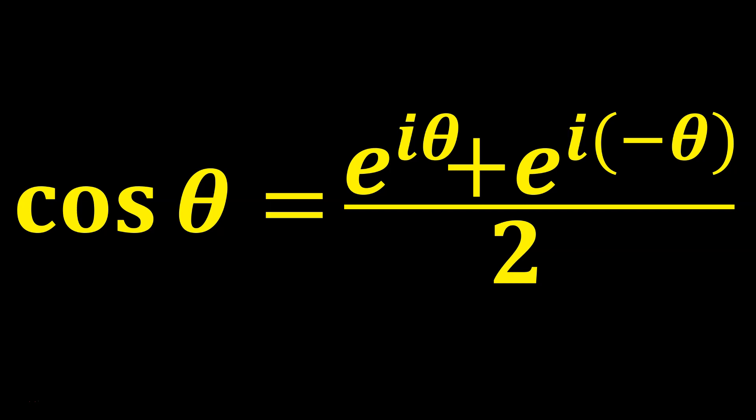Welcome one and all to the Math Magic Show. In this one we're going to prove that cos θ equals e to the iθ plus e to the i negative θ over 2.